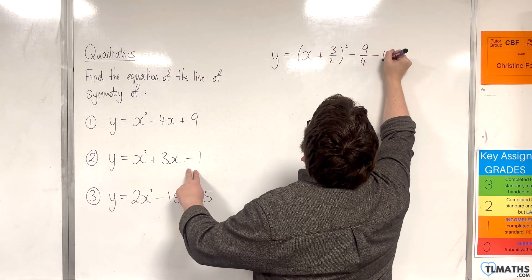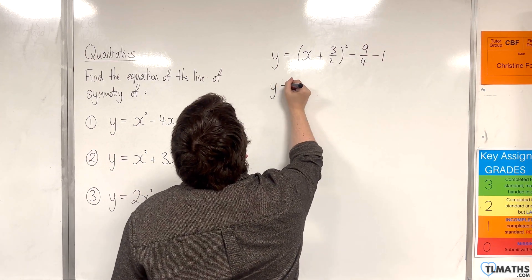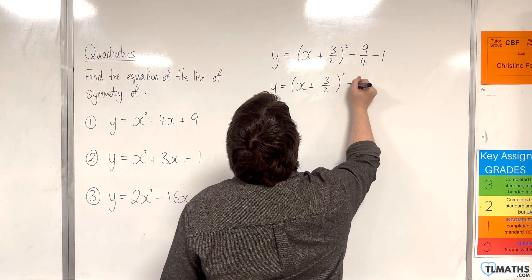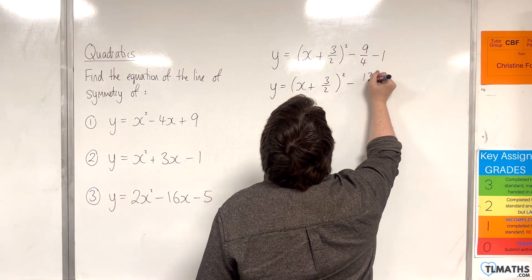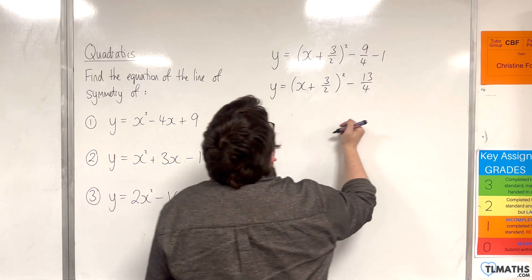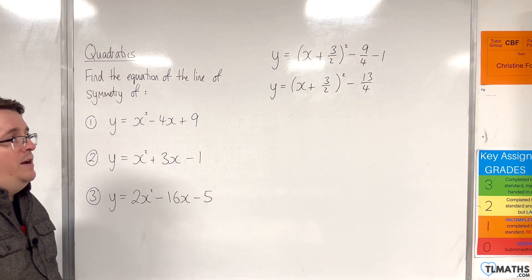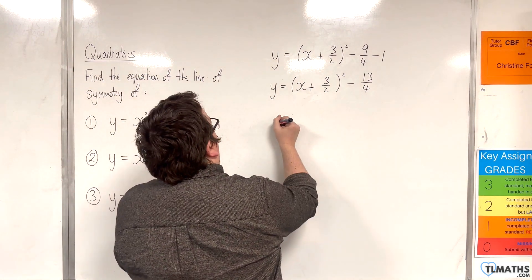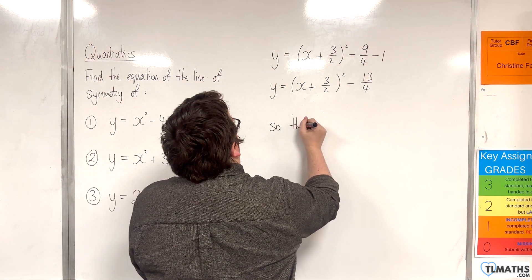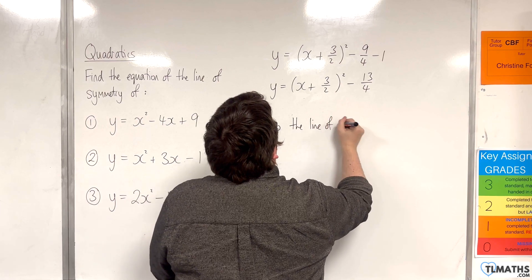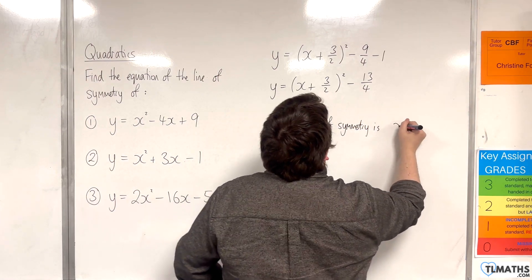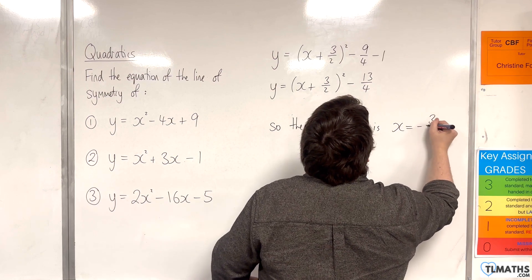And we're taking away 1. So y equals x plus 3 halves squared, and then we're taking away 13 quarters. So the vertex will be at minus 3 halves, minus 13 quarters. So the line of symmetry is x equals minus 3 halves.